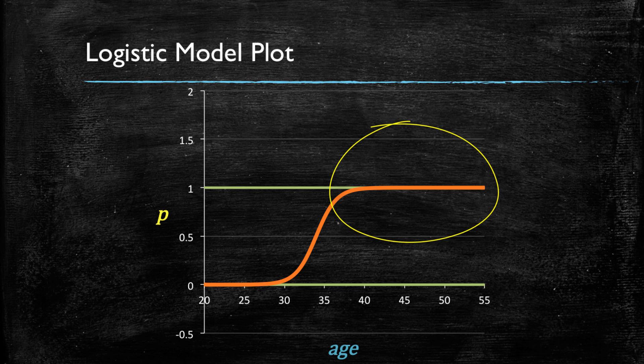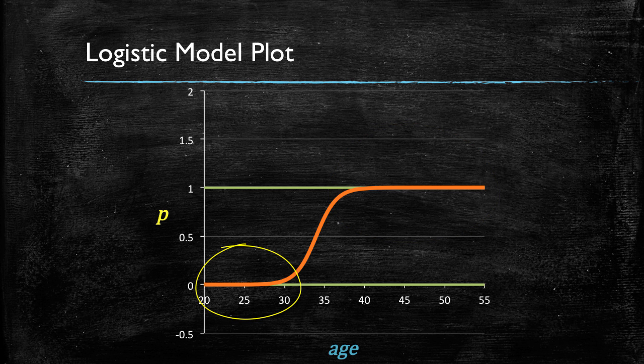In fact, as customers grow older, the probability asymptotically gets closer to 1. And as customers grow younger, the function is asymptotically closer to 0, but never below 0 or above 1. This is the plot of a logistic model.